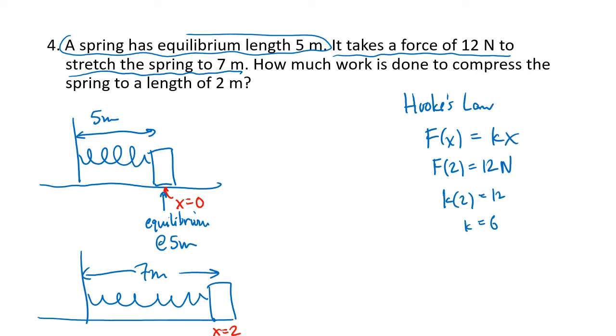Now the question is how much work is done to compress the spring to a length of 2 meters. So again, work is going to be the integral from a to b of my force with respect to x. Now, what I'm doing is I'm compressing the spring from equilibrium to 2 meters length, which means I'm moving to x equals negative 3. I'm going from the equilibrium length of 5, and I'm pushing the spring to the left so that I'm at x equals negative 3.